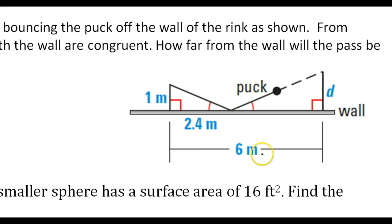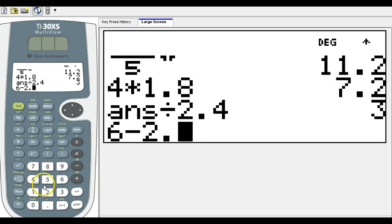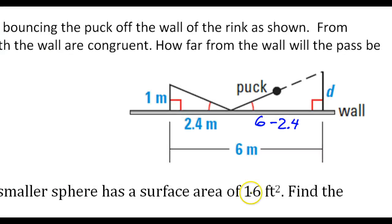The key is we need an expression for this side of the bigger triangle. And we know that if the whole length is 6 and this part is 2.4, then the missing part over here we could write 6 minus 2.4. So what is that? That's 3.6. So this part right here is 3.6.